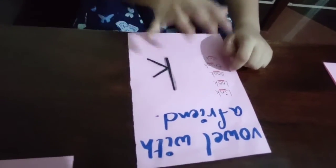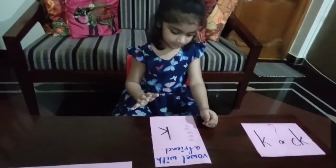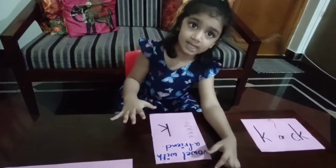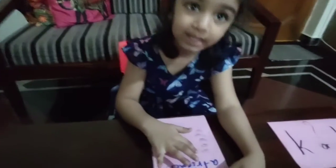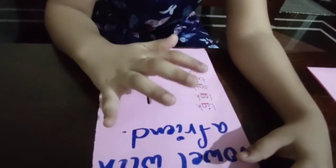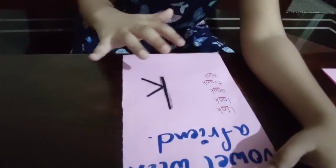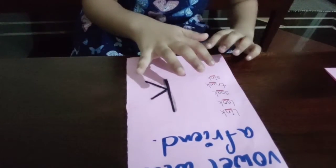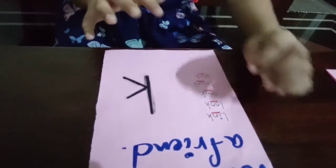A vowel with a friend — we use K. If a vowel has a friend, we use K. Link: I has a friend, N. Look: O has a friend, O. Soak: O has a friend, A. Trunk: U has a friend, N. Sink: I has a friend, N.